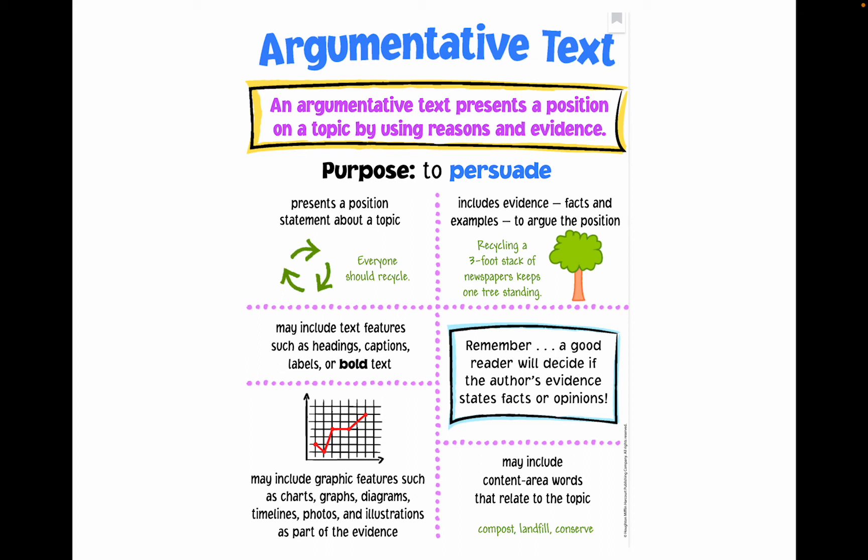Argumentative texts may include text features such as headings, captions, labels, or bold text in order to better organize and present their information. This type of text may also include graphic features such as charts, graphs, diagrams, timelines, photos, or even illustrations as part of the author's evidence.